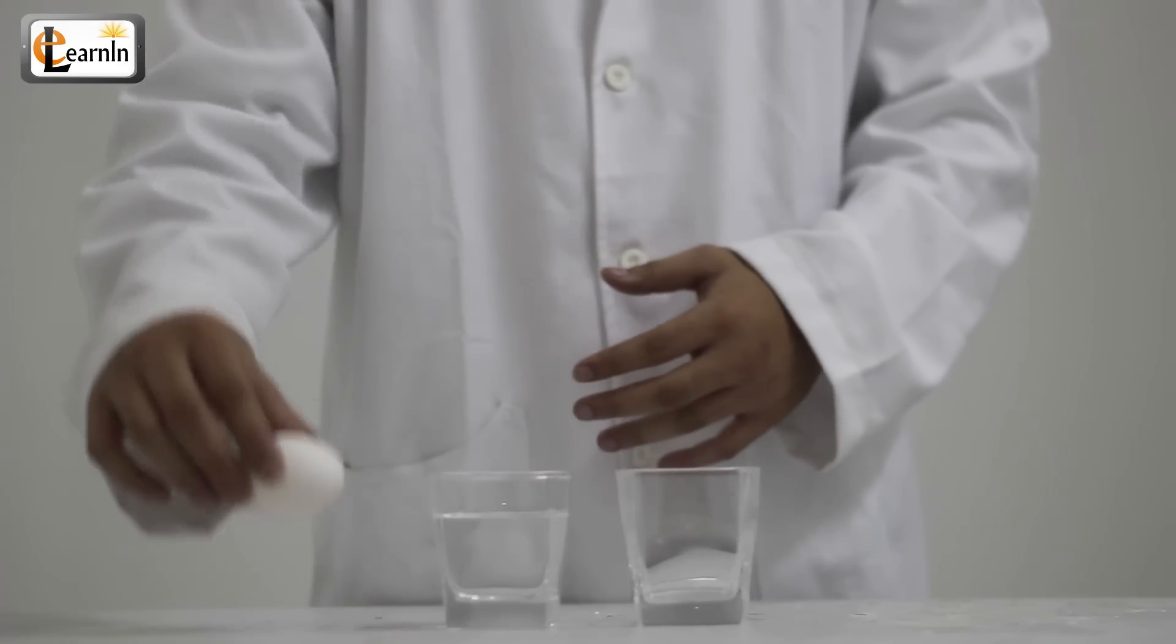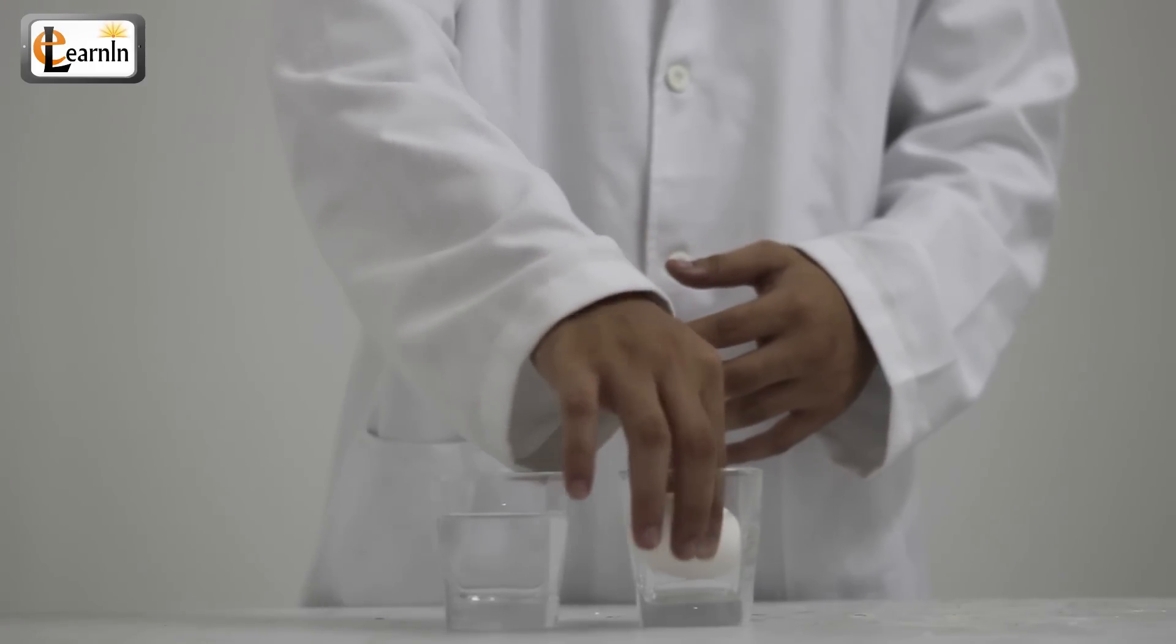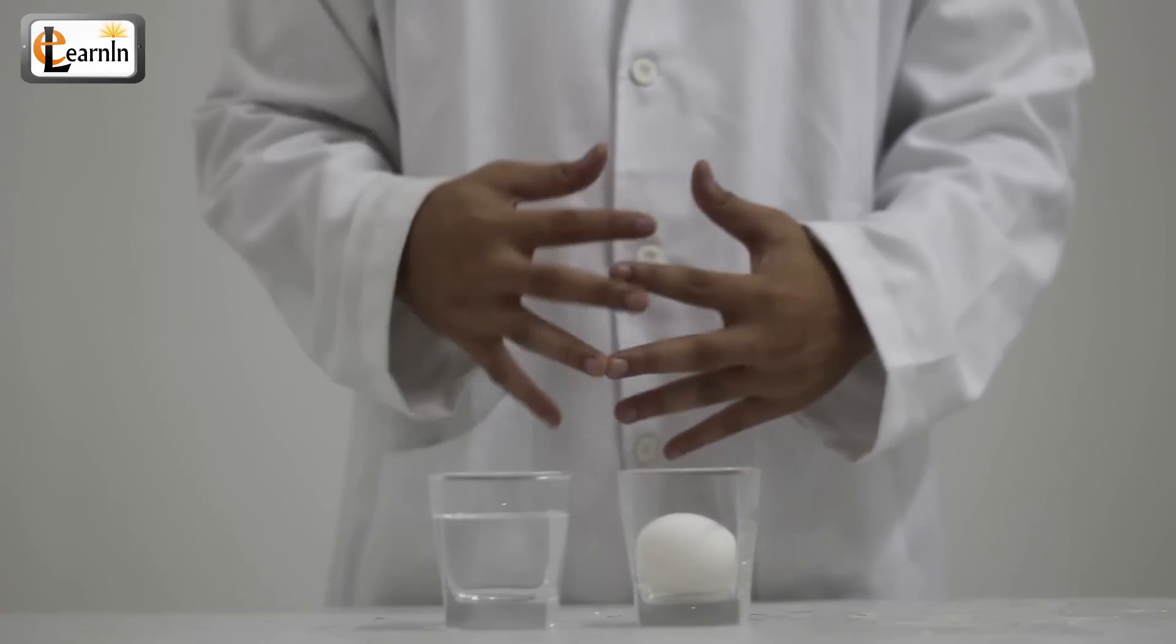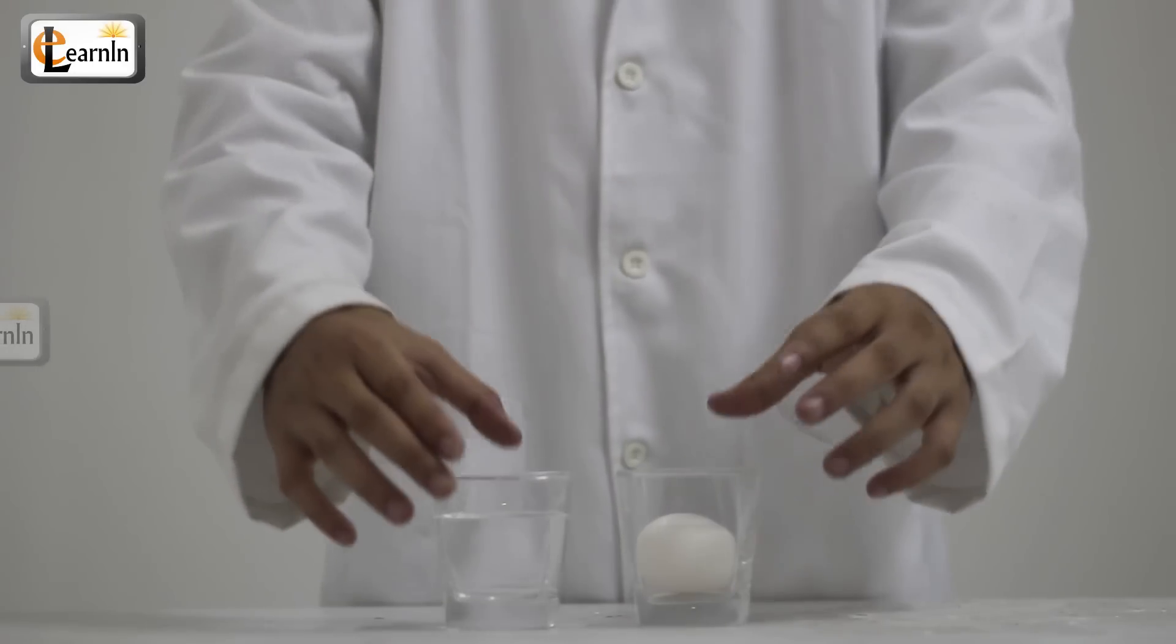Place the raw egg in the glass. Now pour some vinegar in so that the egg is completely in it.